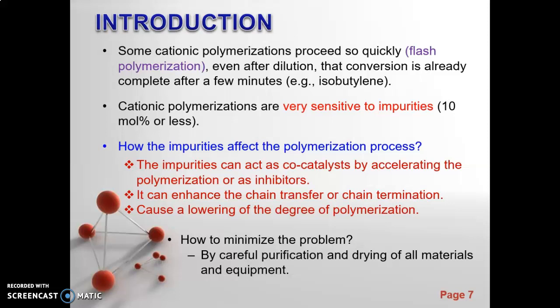Some cationic polymerization processes occur so quickly, which is flash polymerization, that even after dilution conversion is already complete after a few minutes, for example with isobutylene monomer. Cationic polymerizations are very sensitive to impurities. How can the impurities affect the polymerization? They can act as a co-catalyst by accelerating the polymerization or as inhibitors to stop or slow down the reaction process. They can enhance chain transfer or termination and cause lowering of the degree of polymerization. How to minimize the problem? By careful purification and drying of all materials and equipment.